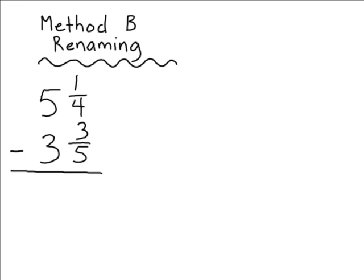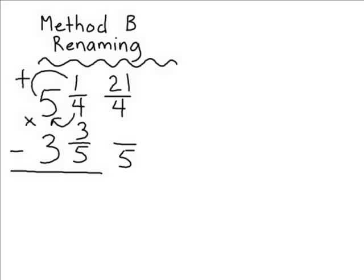Now let's solve the same problem using the renaming method. The first step is to simply take each of the mixed numbers and rename them as improper fractions. When renaming mixed numbers as improper fractions, start off by rewriting the same denominator — just rewrite the 4 as a number 4 and the 5 as a number 5. Taking 5 and 1 fourths first, after writing a denominator of 4, we figure out the numerator: multiply the denominator by the whole number — 4 times 5 is 20 — then add the numerator, and 20 plus 1 is 21. So 5 and 1 fourths renamed as an improper fraction is 21 over 4.